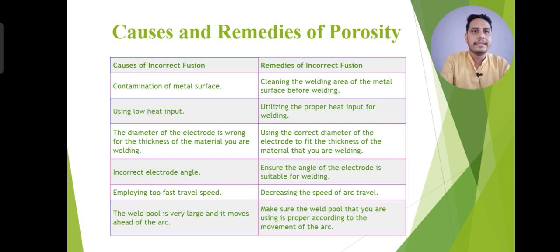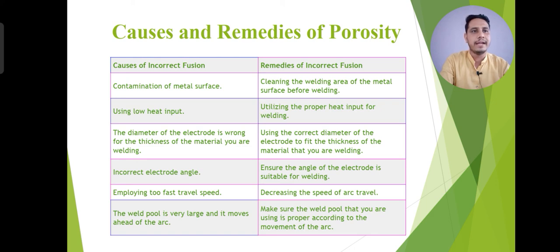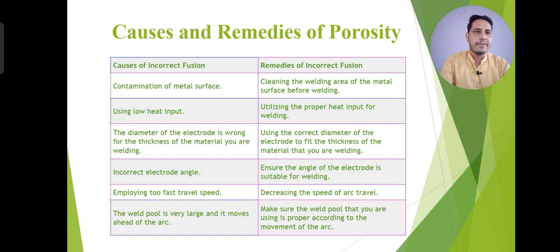These are the causes and remedies for incomplete fusion. Contamination of metal surfaces is one cause — the remedy is cleaning the welding area of the metal surface before welding. Using low heat input will also contribute to this type of defect, so proper heat input for welding is required. The diameter of the electrode should be proper; if the diameter of the electrode is short, it will definitely create incomplete fusion. Improper travel speed also creates this type of defect.